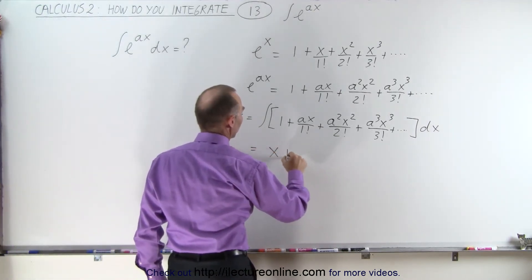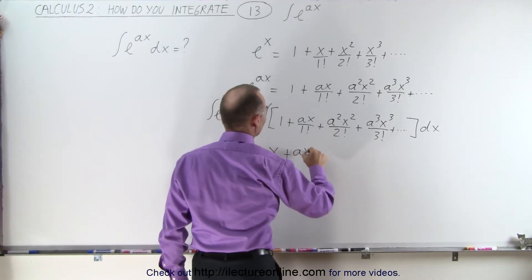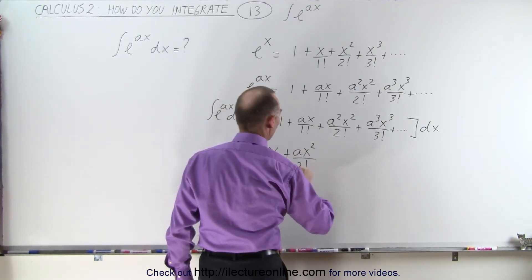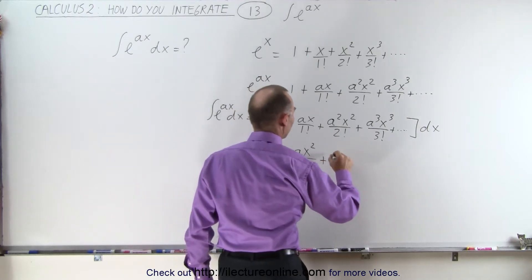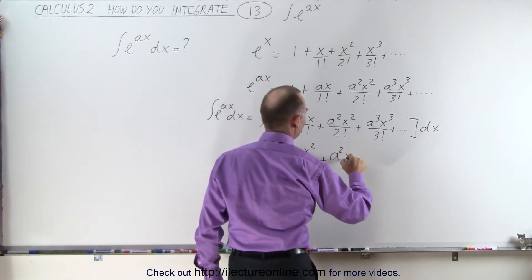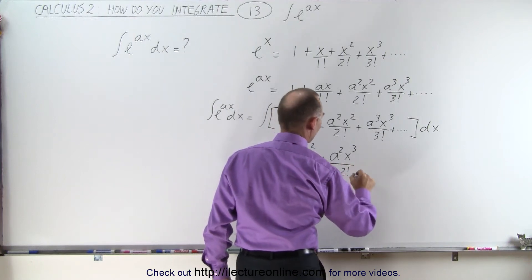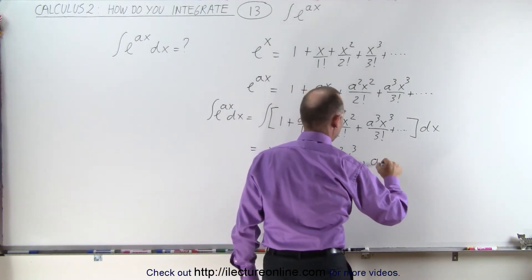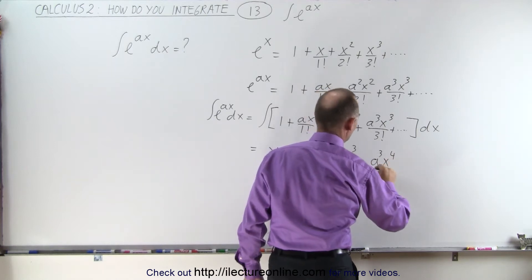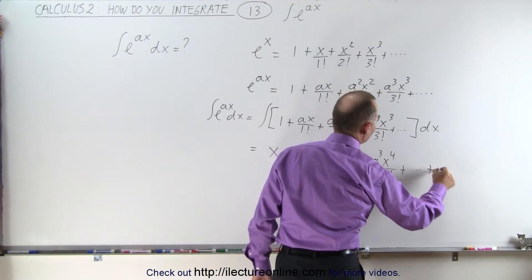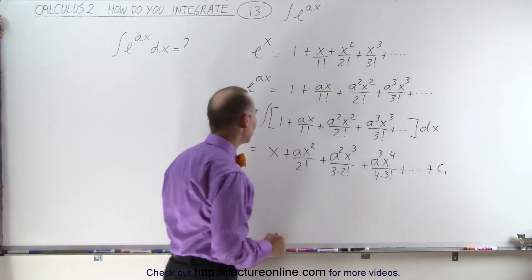This would be x plus ax squared over 2 factorial plus a squared x cubed over 3 times 2 factorial plus a cubed x to the fourth over 4 times 3 factorial, and then finally plus some constant of integration.